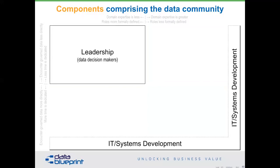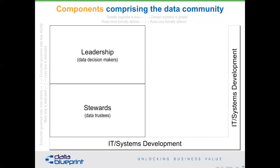So what have we got? We've got leadership components — these are people that make decisions about data. The problem is most of the time when they make these decisions, they don't realize they are decisions about data. Part of our job is to educate them around that. Then there is the stewards group we're directly addressing today — these trustees of the data.